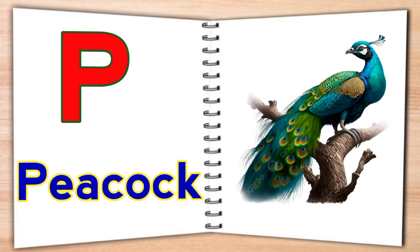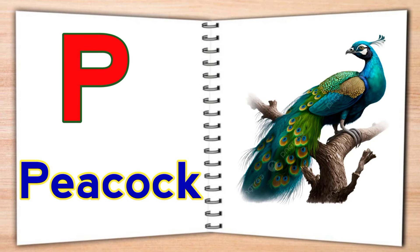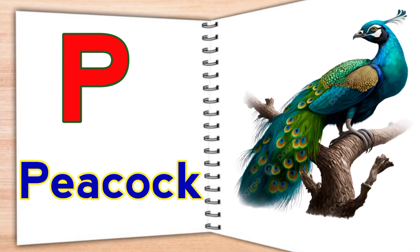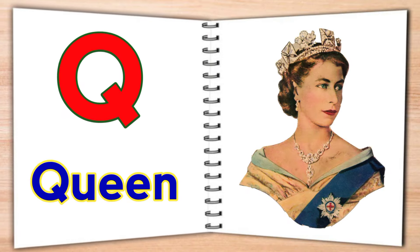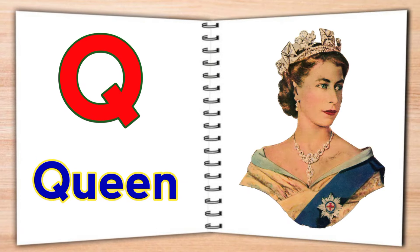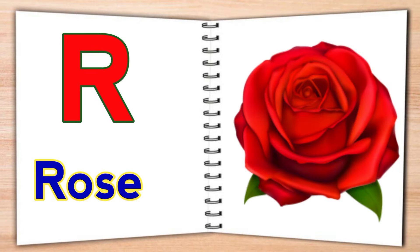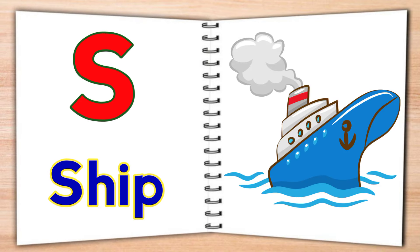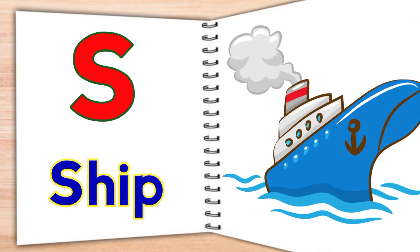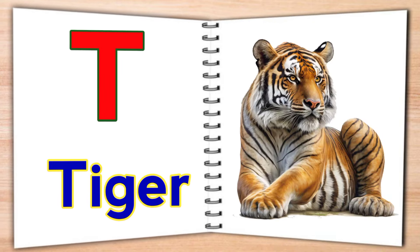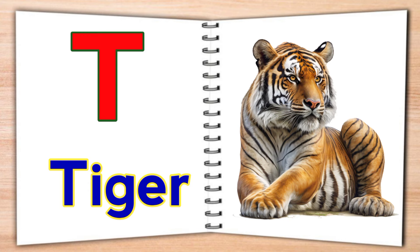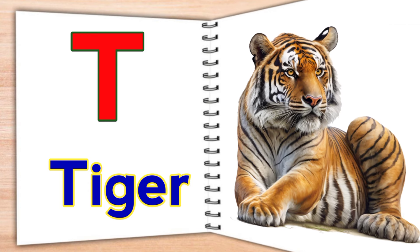O for orange, P for peacock, Q for queen, R for rose, S for sheep, T for tiger.